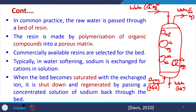In common practice, the raw water is passed through a bed of resin. The resin is made up of polymerized organic compounds formed into a porous matrix. There are commercially available resins depending on the concentration of calcium, magnesium, or any other ion to be exchanged. Typically in water softening, sodium is exchanged for cations using a sodium-based resin. When the bed becomes saturated — meaning all sodium has been replaced by calcium and magnesium — the bed is regenerated by passing a concentrated sodium solution back through it.